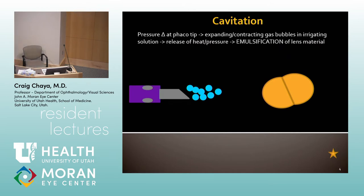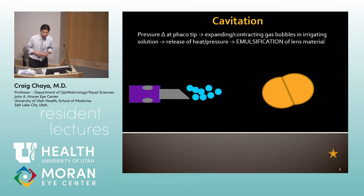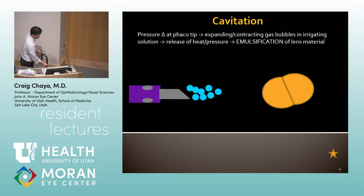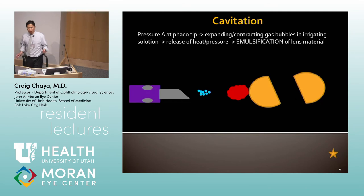Actually, cavitation is helpful — you do need some cavitation for phacoemulsification to occur. There's a pressure change that occurs at the tip. When that pressure change occurs you get gas bubbles that expand and contract, and it's the collapse of those gas bubbles that releases energy — heat and pressure — that allows you to emulsify the piece. So it's actually a good thing. Phaco tip vibrates, bubbles expand, bubbles collapse, pieces break up. That's cavitation.